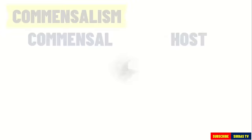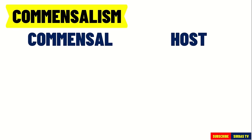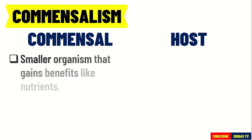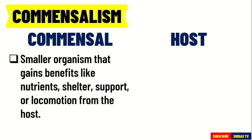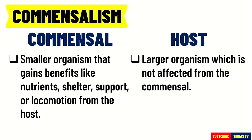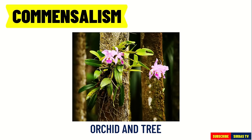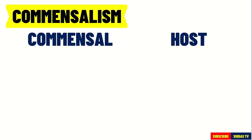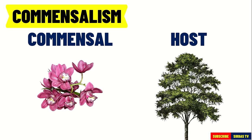In commensalism, there are two roles played by the species: a commensal and a host. The commensal is the one that gains benefits like nutrients, shelter, support, or locomotion from the host, which is not affected. The commensal relation is often between a larger host and a smaller commensal. In the orchid-tree relationship, the orchid is the commensal and the tree is the host.